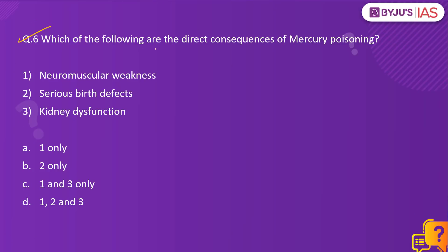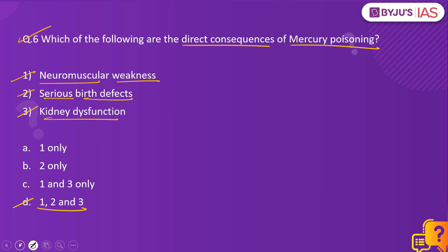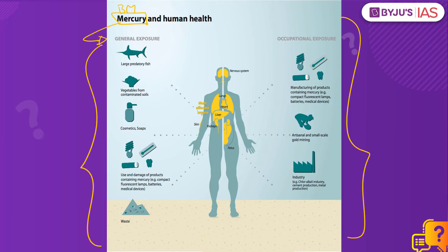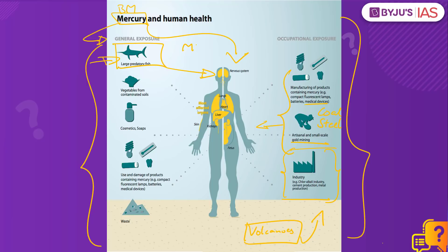Let's take up a related topic under the sixth question: Which of the following are the direct consequences of mercury poisoning? Neuromuscular weakness, serious birth defects, kidney dysfunction. All three are correct — option D is the right answer. Mercury, being a biomagnifier and toxic heavy metal, is extremely hazardous for all organisms including humans. Mercury is released into the environment through both natural sources such as volcanoes and anthropogenic sources. Most toxic mercury found in the environment comes from industrial processes — the gold industry, coal and steel industry, and the medical industry all contribute to releasing mercury, which enters the food chain and contaminates all organisms.